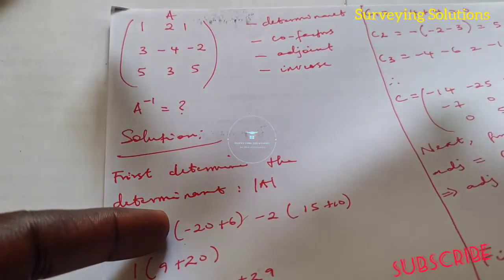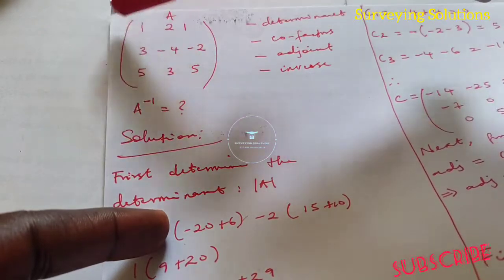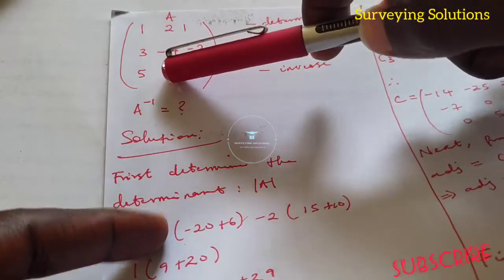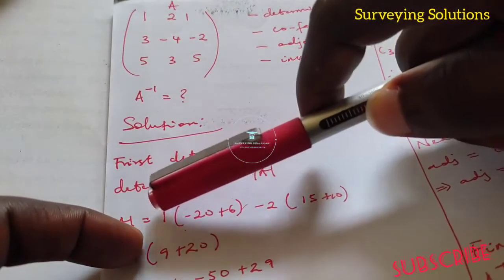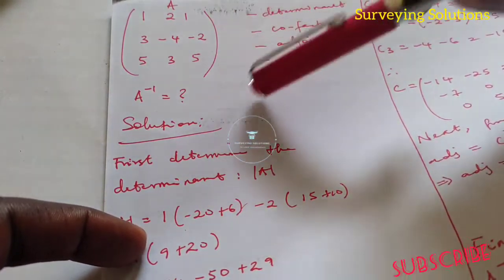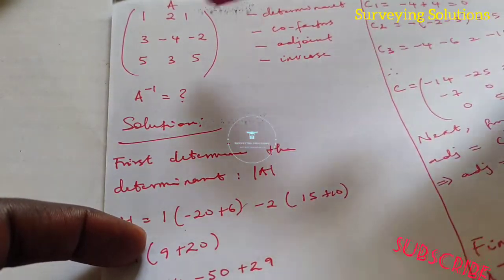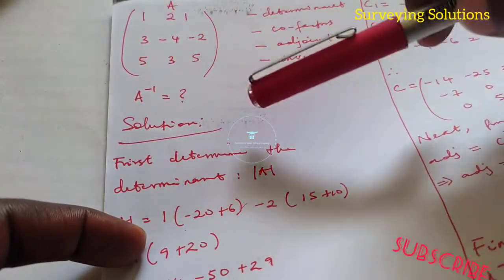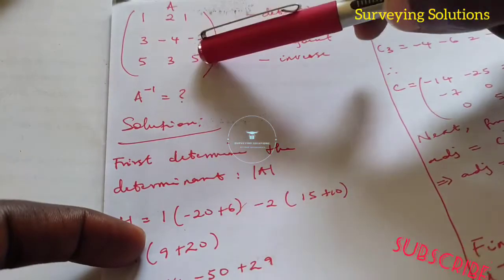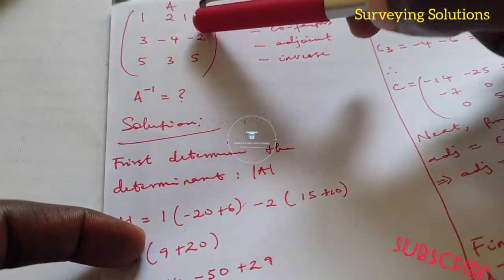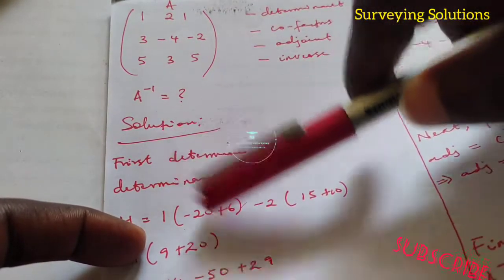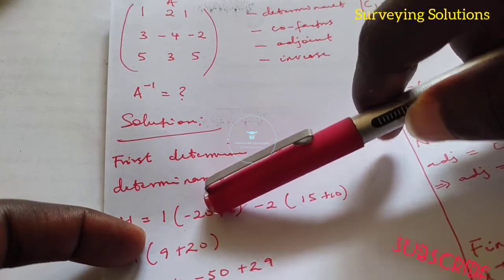To get the determinant, when we pick a11 which is 1, we are not going to consider the level of this column and this row — we're only considering minus 4 and 5, and minus 2 and 3. So we have minus 4 times 5 which is minus 20, then minus 2 times 3 which is minus 6. That minus sign times minus 6 gives you plus 6.